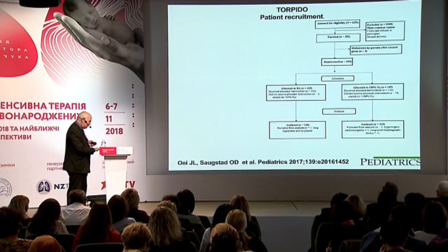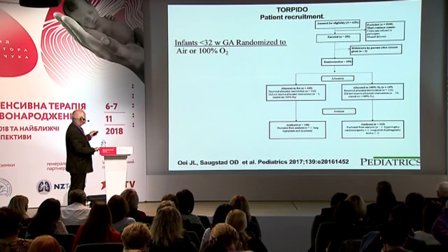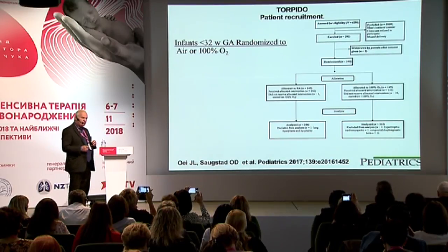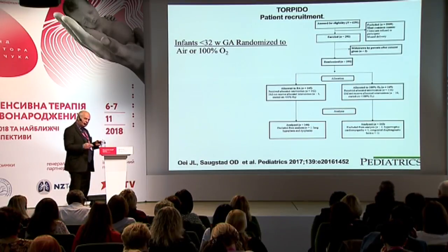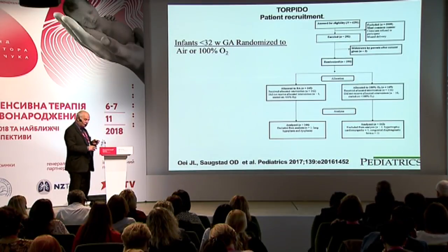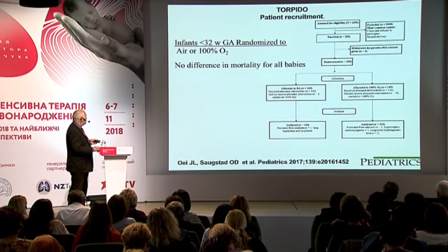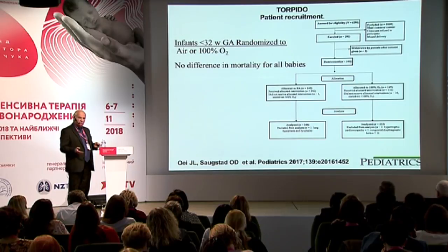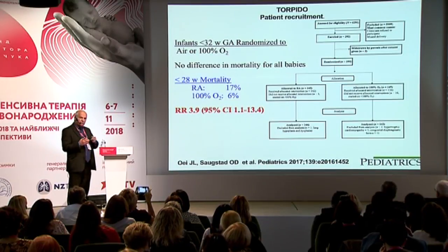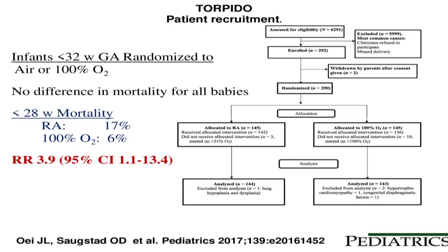Last year we published the TORPEDO trial, an Australian-based study where babies less than 32 weeks were randomized to air or 100% oxygen. This study was stopped prematurely because it was difficult to recruit babies into the 100% oxygen arm. First of all, there was no difference in mortality when we looked at the whole cohort. But in a secondary analysis of babies less than 28 weeks, to our surprise and concern, we saw a significantly higher mortality in babies less than 28 weeks started with air compared to 100% oxygen—relative risk 3.9.